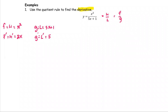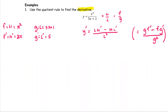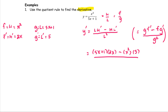Now we put it together using the quotient rule to find y prime. In the pattern of low d-high minus high d-low over low squared — or g times f prime minus f times g prime over g squared — we replace: the low with 5x plus 1, the d-high with 2x, the high with x squared, the d-low with 5, and the low squared with the quantity 5x plus 1 squared.